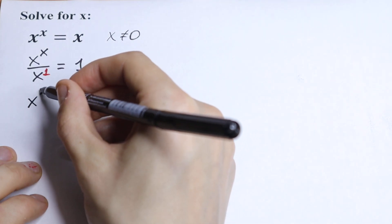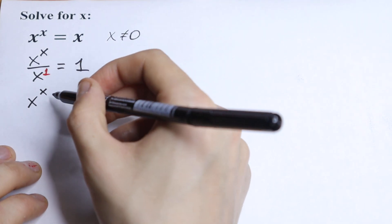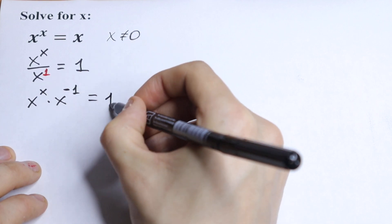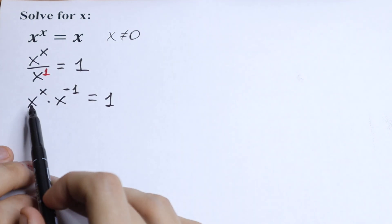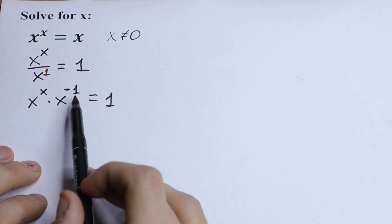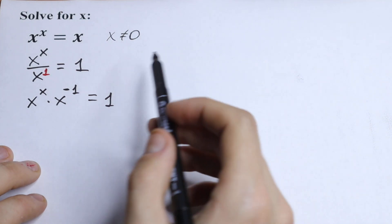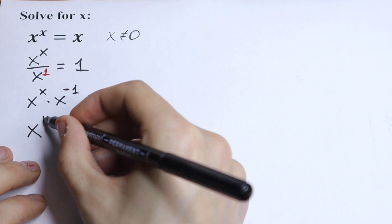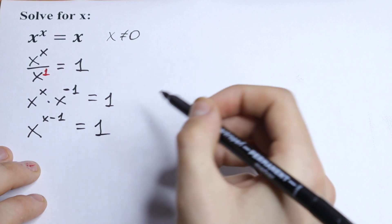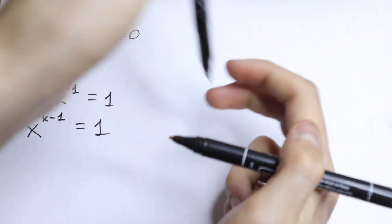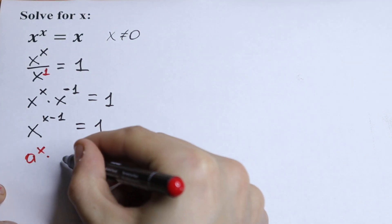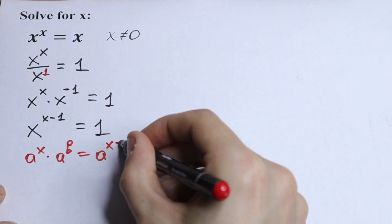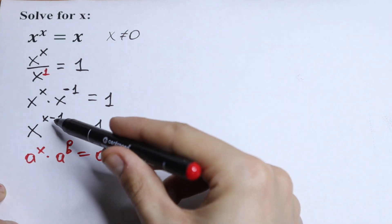So we will have x to the power x times x to the power minus one equal to one. Nothing hard because we have the same base but different exponents. So of course we can write it in one power. We can write it as x to the power x minus one equal to one. Because if we have a to the power x times a to the power b, we can write it as a to the power x plus b. And we use this rule right here.